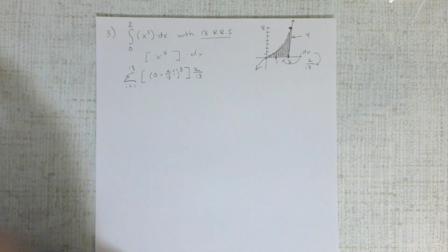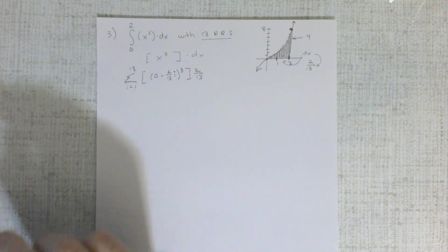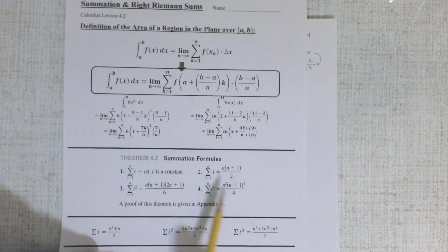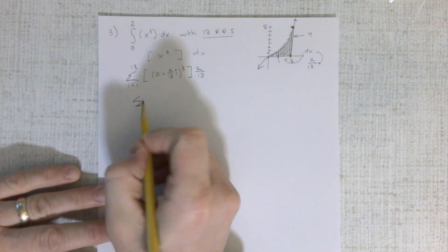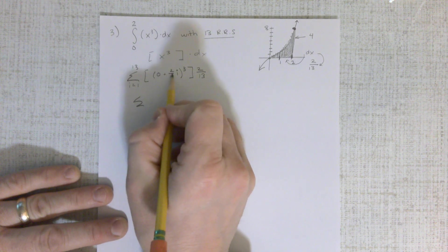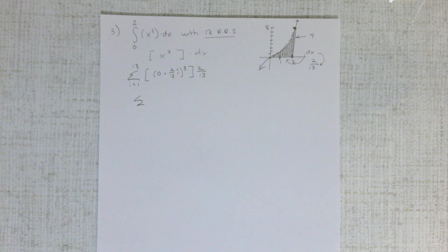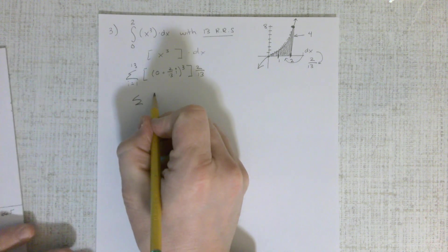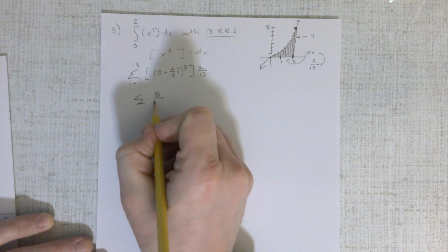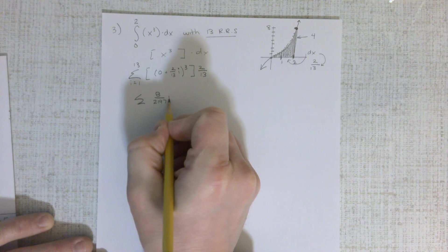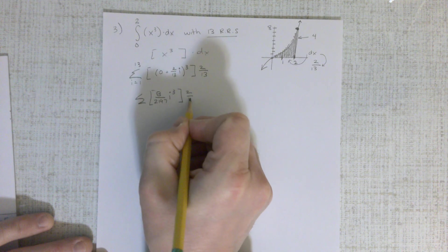Now we just need to use our summation rules to simplify this down. Use all of these rules down here to count it, and see what we have. So let's just clean this up a little bit. 0 plus this is just 2 thirteenths. Everything cubed, that would be 8 over 13 cubed would be 2,197, i cubed times 2 thirteenths.